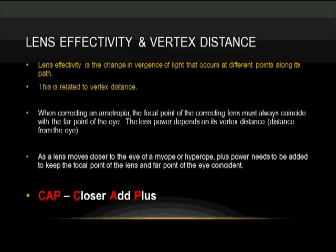So in correcting an ametropia like myopia or hyperopia, the focal point of the correcting lens must coincide with the far point of the eye. This lens power depends on its vertex distance, the distance from the eye. Keep in mind, and never forget this, that as a lens moves closer to the eye, either of a myope or a hyperope, you always add plus.